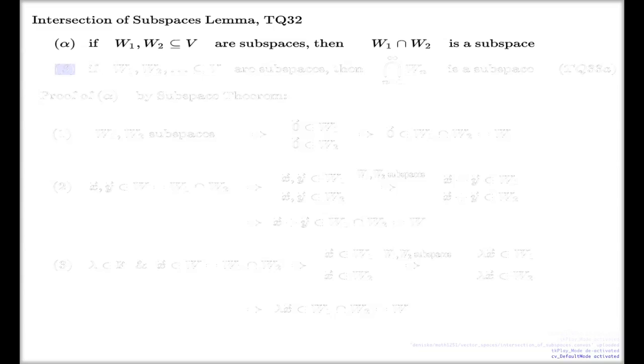But beta actually, it's the induction version of this first part alpha. It's the version where you look not at two subspaces, but when you look at many subspaces.